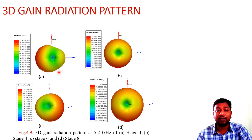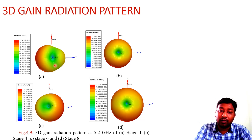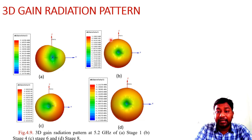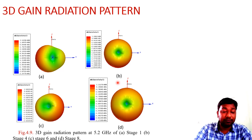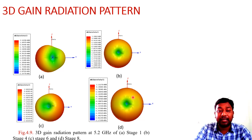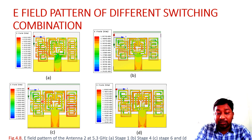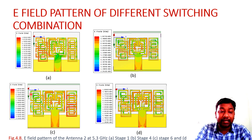The 3D gain radiation patterns of the antenna for different states are shown. Stage one has radiation in the negative Y direction, stage six has radiation in the positive Y direction, while other states show omnidirectional patterns. In stage six, those SRRs act as mu-negative metamaterial while all other SRRs behave normally — that is why the beam is focused in a particular direction.